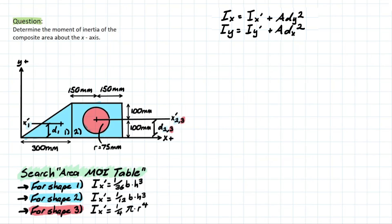Now we can hop into the problem. I've updated the drawing slightly so that we can understand what's going on before we start plugging and chugging using this formula. I've changed the colors of the diagram a little bit — blue indicates shapes that are going to be positive or additive in our formula, and red indicates shapes that are going to be negative. That circle, since it's a hole, is going to be subtractive from our total moment of inertia, because more material taken away influences how strong the cross-section is when applied with bending.